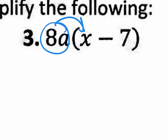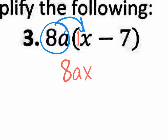Distributing 8a times x — what do I get? 8ax. If you're confused about this, remember there's an invisible 1 right here. So you multiply the coefficient 8 times the coefficient 1, that's 8. And then ax means 8 times x. Let's now distribute to the minus 7: 8a times negative 7 gives us negative 56a.